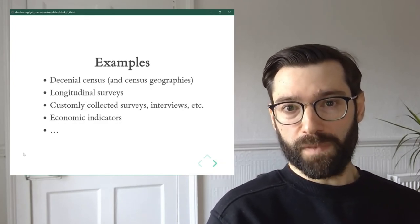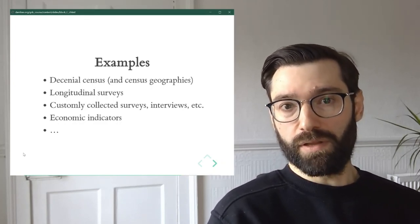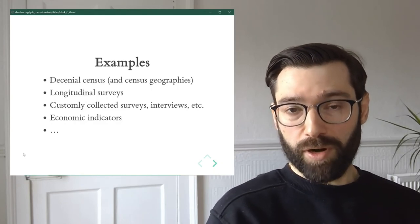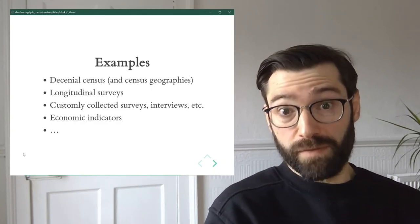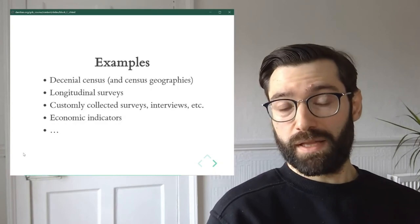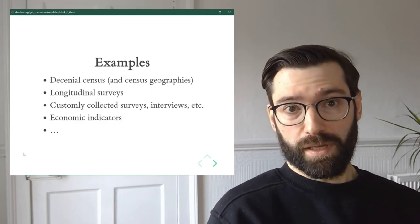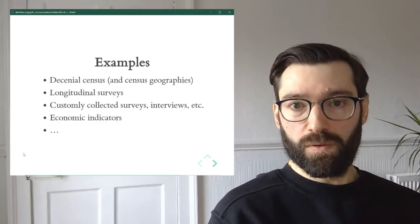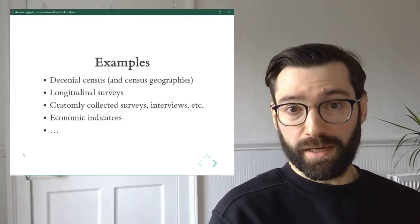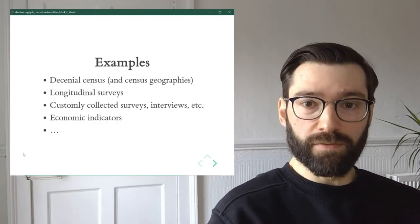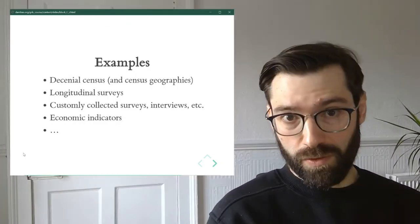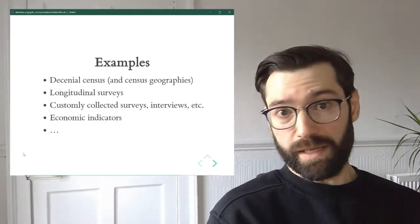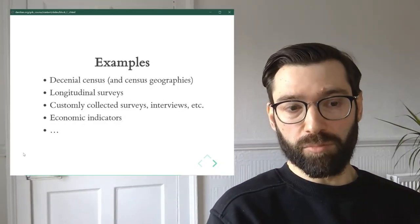Economic indicators is another example of massive enterprises. So for example, the GDP indicator, the gross domestic product index that measures the size of the economy is an incredibly large enterprise to collect. So that means that it either doesn't come very often or when it comes, it comes at very coarse resolutions, and in any case, they're very costly enterprises.